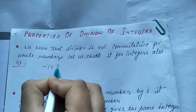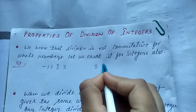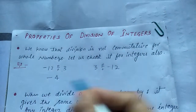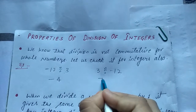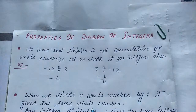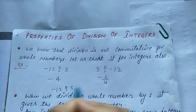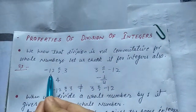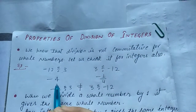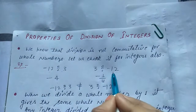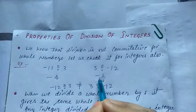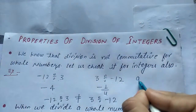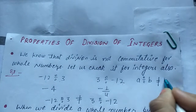Minus 12 divided by 3, and 3 divided by minus 12. When minus 12 divided by 3 is minus 4, and 3 divided by minus 12 is minus 1 upon 4. So minus 12 divided by 3 is not equal to 3 divided by minus 12. It means a divided by b is not equal to b divided by a.